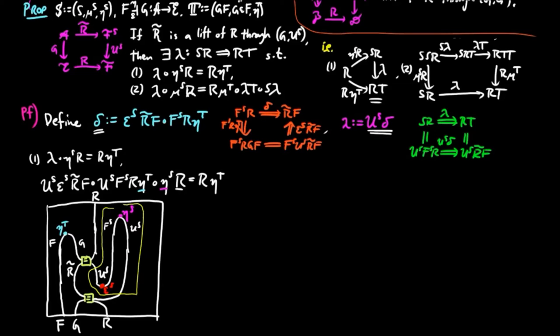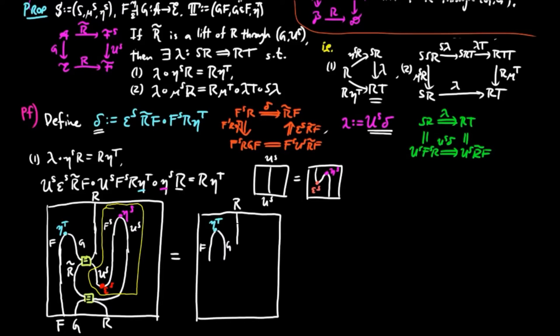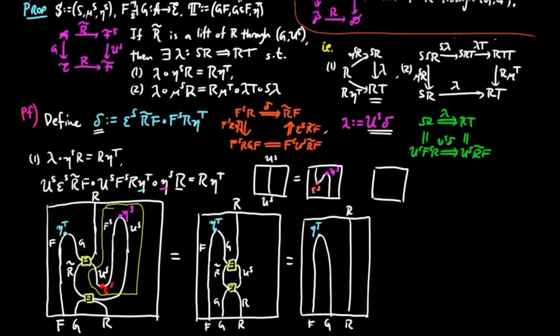We use the triangle identity for fs u s, and reduce the diagram by pulling in this lobe. Then since composition of natural equalities is the same as just giving the horizontal composition of functors, we arrive at r eta t, which proves the first equality.